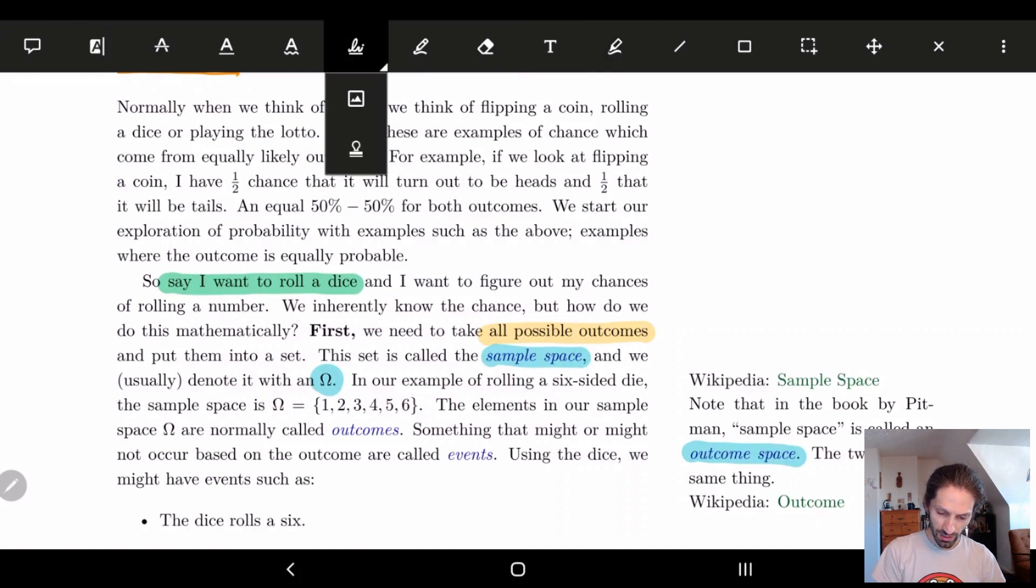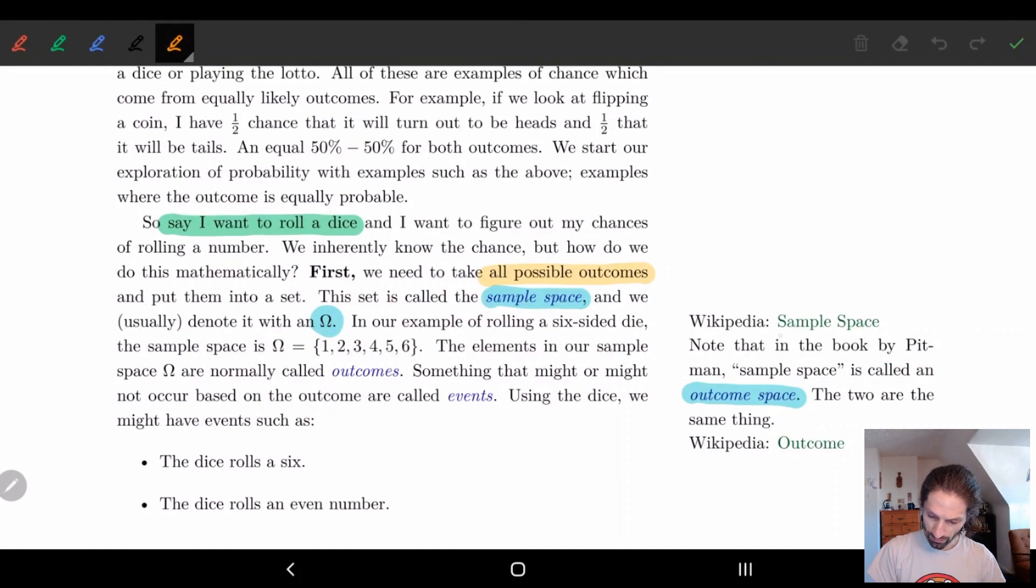The book is from 1993, so a lot of the terminology has changed since back then. Now most people call it sample space. I have little links to Wikipedia as we're going along. Feel free to click on any of these links. The links aren't green—I don't like the big blue vibrant colors, so they're green for the links, just a heads up.